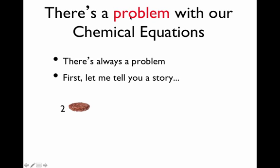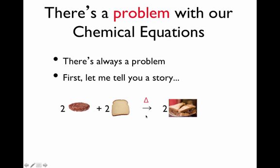Imagine I'm going to have a cookout. My wife and I are going to have a cookout, and I come home and say we're going to have a cookout. I've got all of the ingredients ready. I have two hamburger patties — that's what the two stands for in front of the patties. I've got two slices of bread. I'm going to heat them up on the grill — that's what the triangle is there for. And we are going to have two hamburger patty sandwiches when I'm done cooking. You can pause the video and think about what's wrong with this.